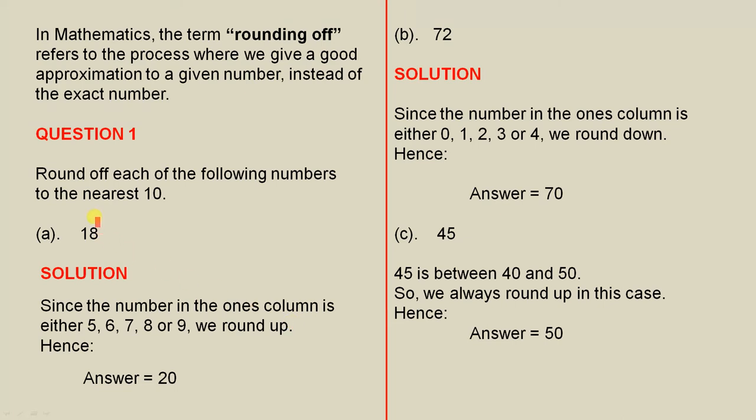Here's the ones column, and you can see that is the number 8, which basically tells us that 18 is closer to 20 than it is to 10. So the answer is 20. We're saying that 20 is a good approximation to 18 to the nearest 10.